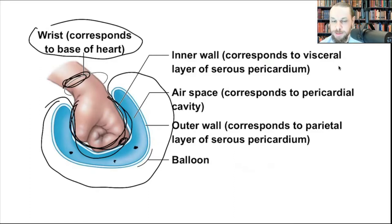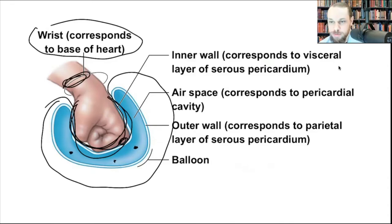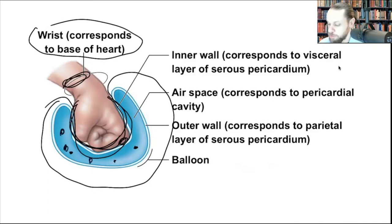A student explains that the sac around the heart normally holds about 50 milliliters of fluid, but it fills up to about 150, making it difficult for the heart to function. The instructor clarifies: how do we distinguish pericardial effusion — where fluid accumulates — from pericardial tamponade? The fluid could be blood, serous fluid, or secondary to trauma or cancer.